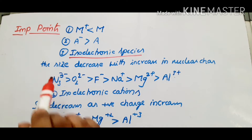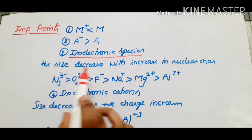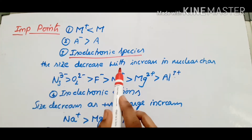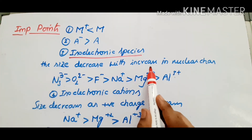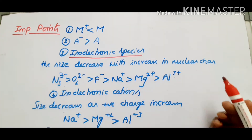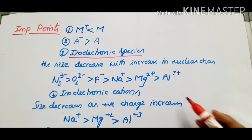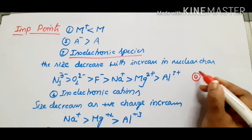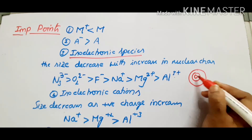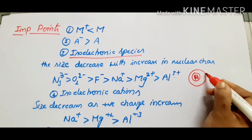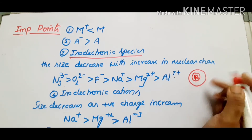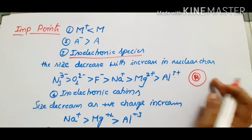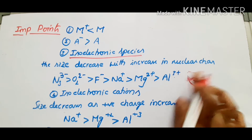For isoelectronic species, the size decreases with increase in nuclear charge. The size decreases with nuclear charge — this is always the same rule.